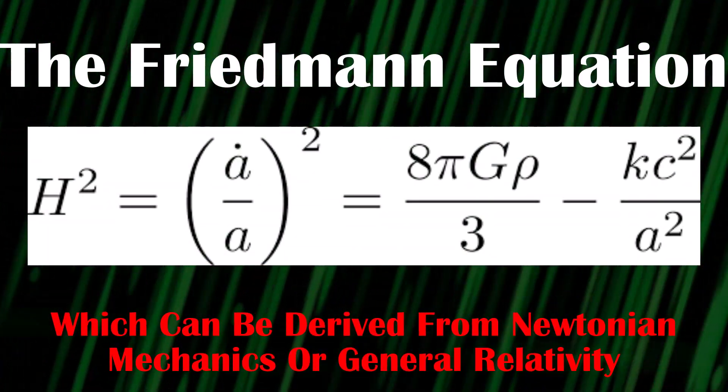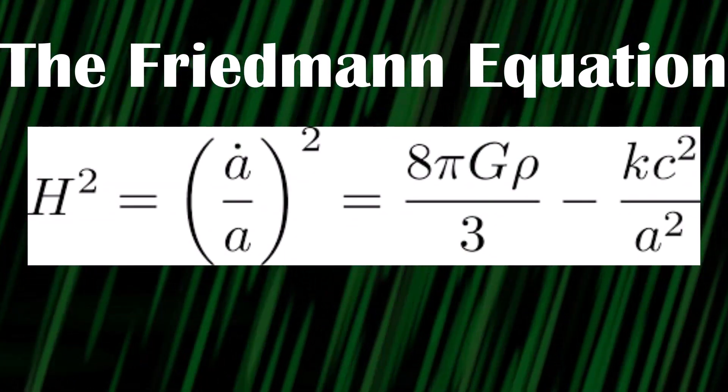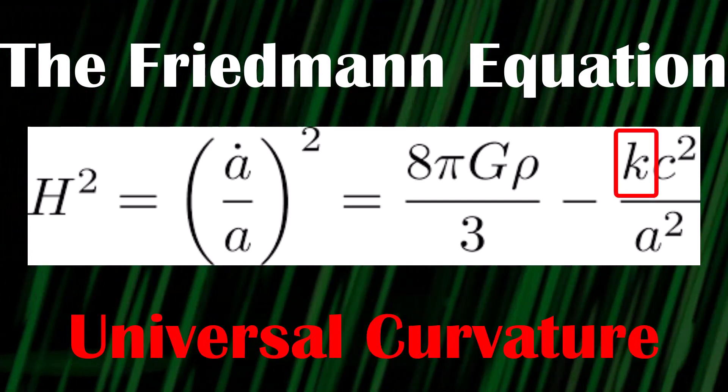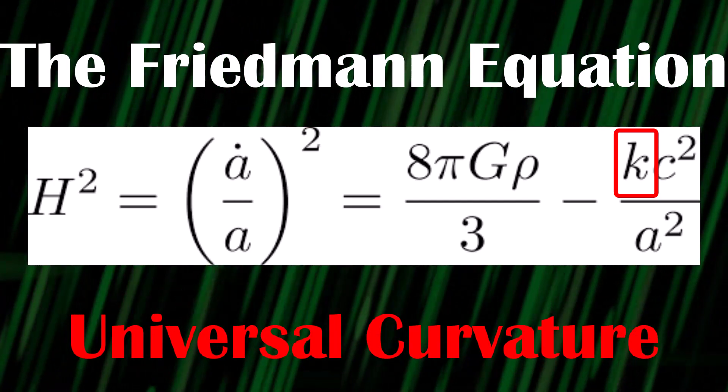And the way it does this is described by what's known as the Friedman equation shown here. The main focus of this video is on the final term k of this equation, and how this one thing describes the geometry of the universe, and how modern estimates of it could imply the universe isn't flat.